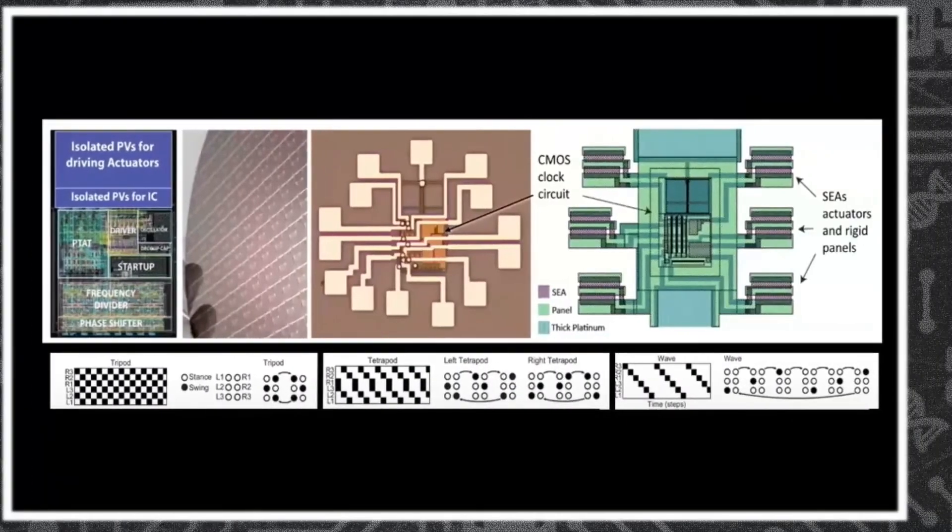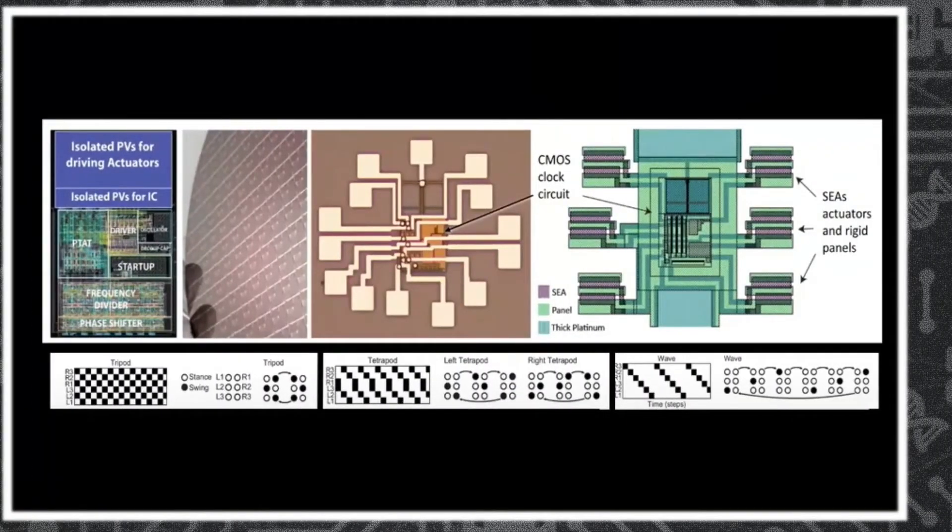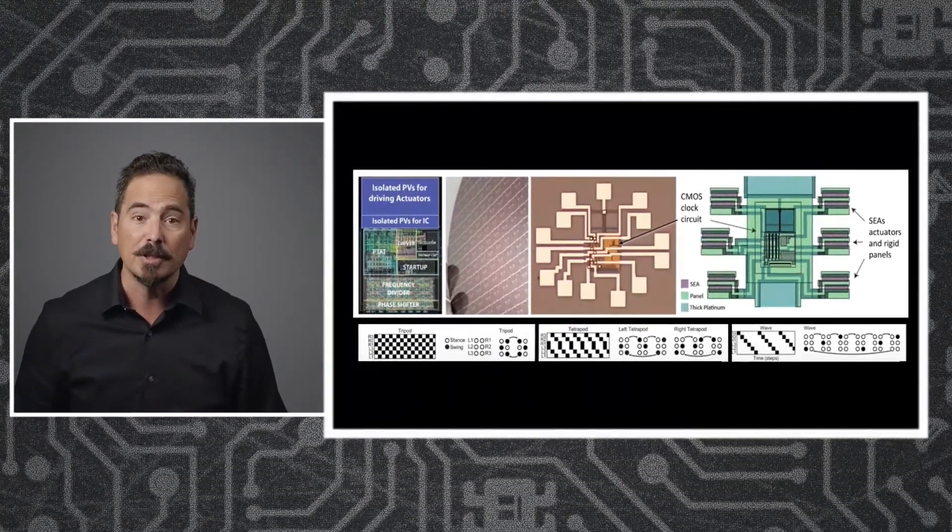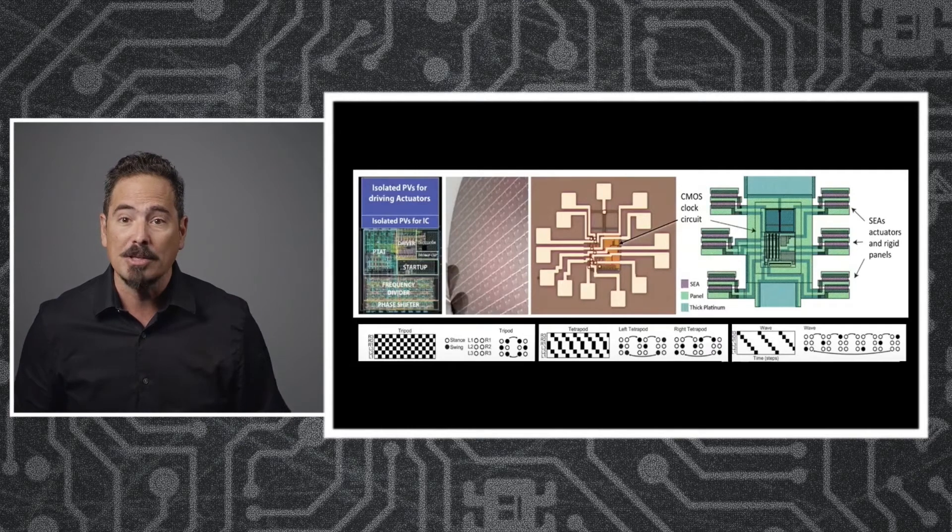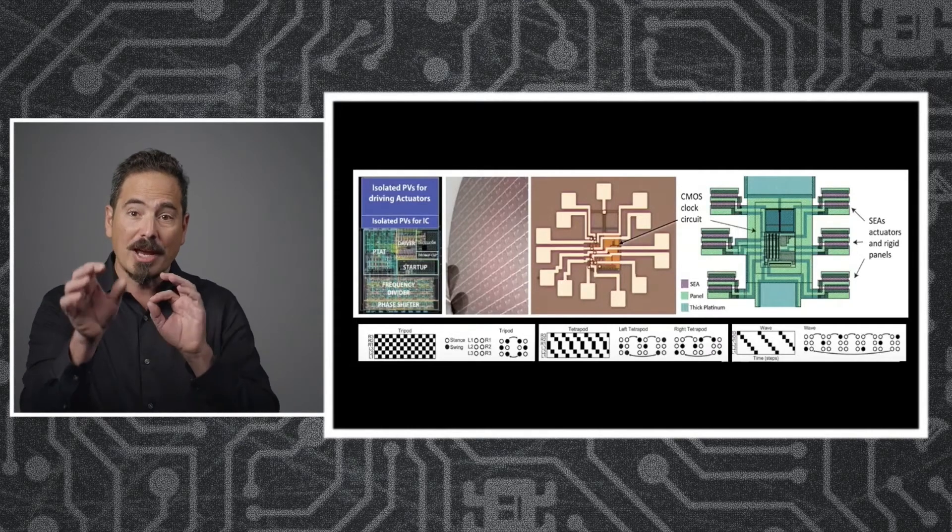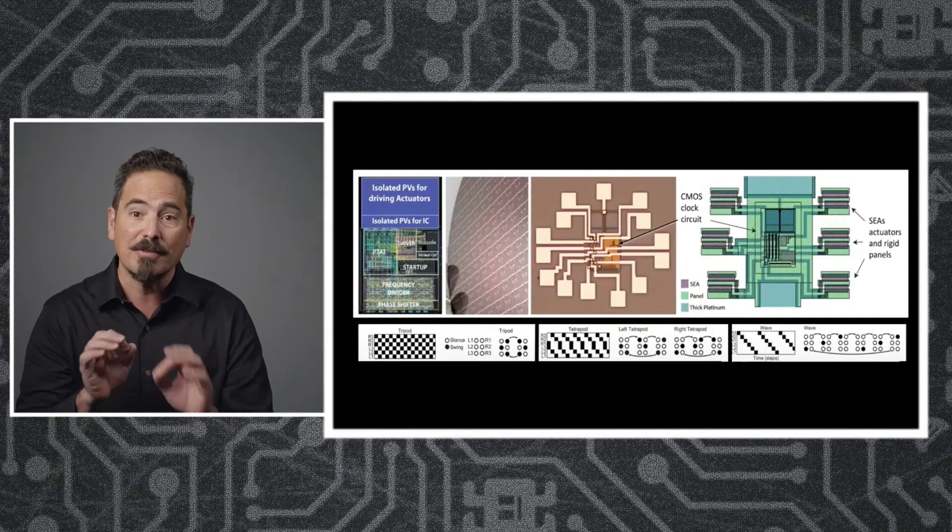We are working now with a commercial foundry, XFAB, to create microchips that would go on these robots. In this particular case, I'm showing you a microchip that acts like a clock circuit. On the second image, you're seeing a wafer full of these microcircuits. We tested that it works right and now we can use it to drive the robots without shining lasers at specific photovoltaics.